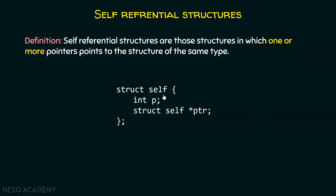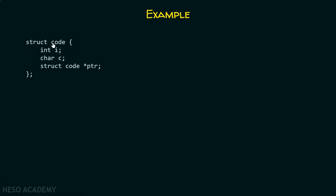Let's consider one example. Here I have declared a struct code which consists of three members: an integer variable i, a character variable c, and a pointer which points to struct code itself.